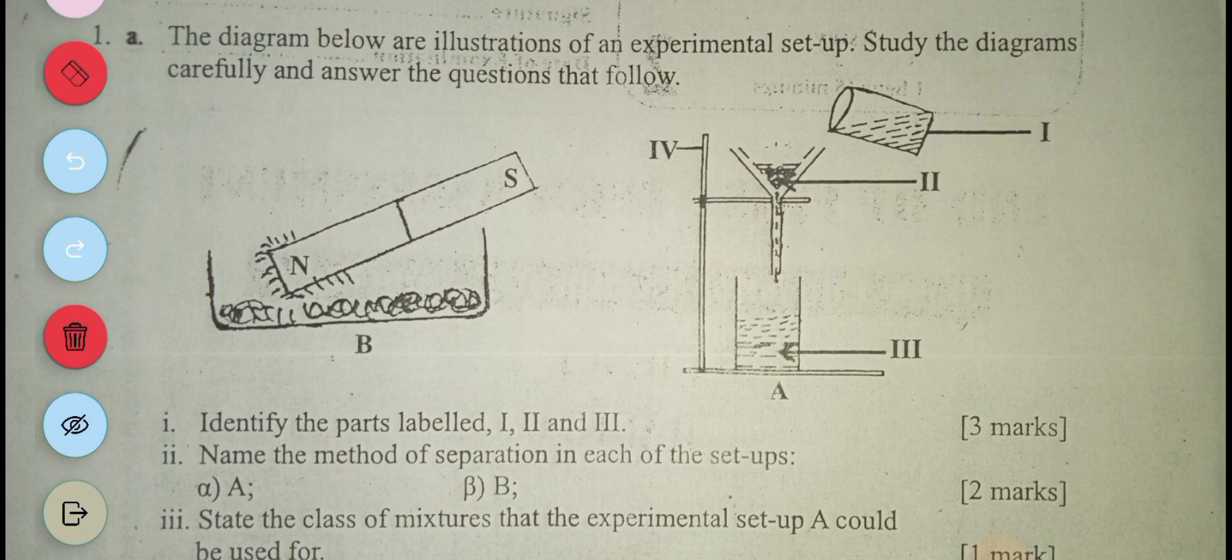The next one asks you to name the method of separation in each of the setups, that's A and B. Then II is asking for the class of mixtures that the experimental setup A could be used for.